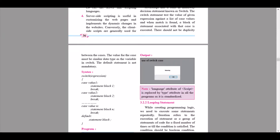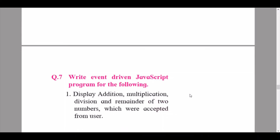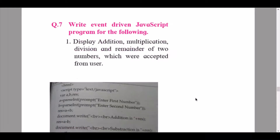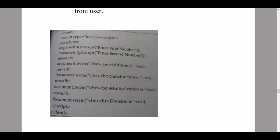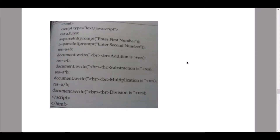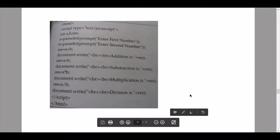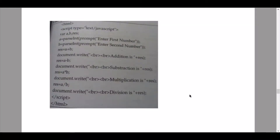Continuing to question 7: write event-driven JavaScript programs. Question 1 asks to display addition, multiplication, division and remainder of two numbers accepted from the user. I have mentioned the code here so you can try it out yourself. Please copy it word for word and try it out on your own PC using notepad, then open it in a browser.